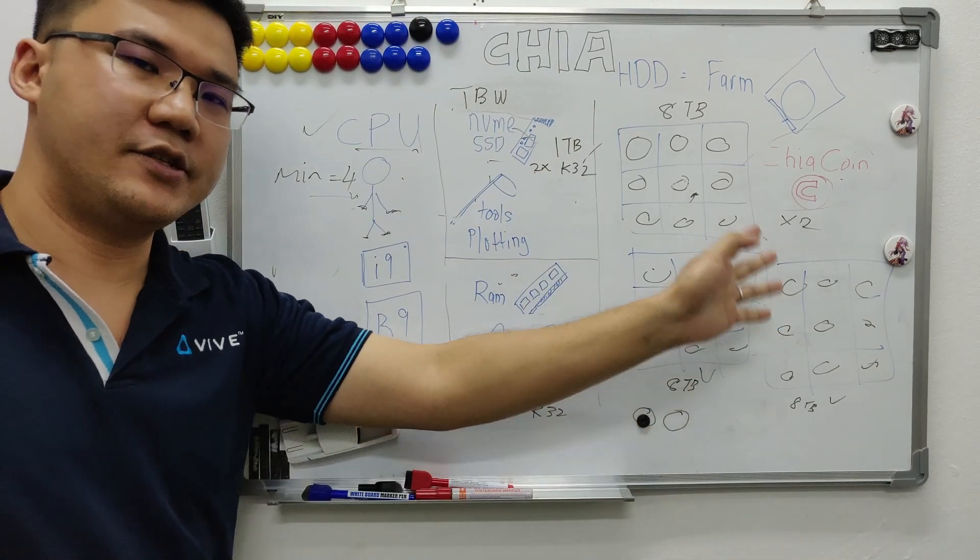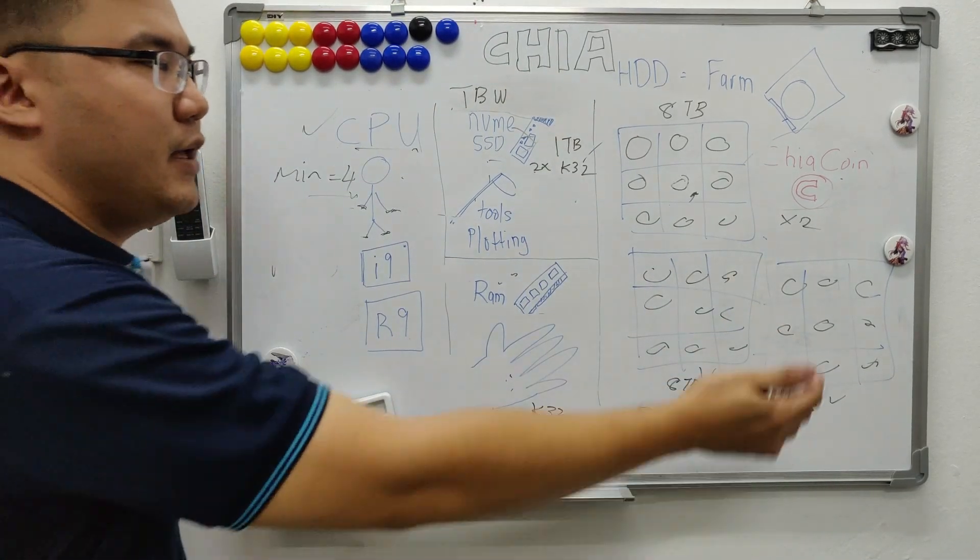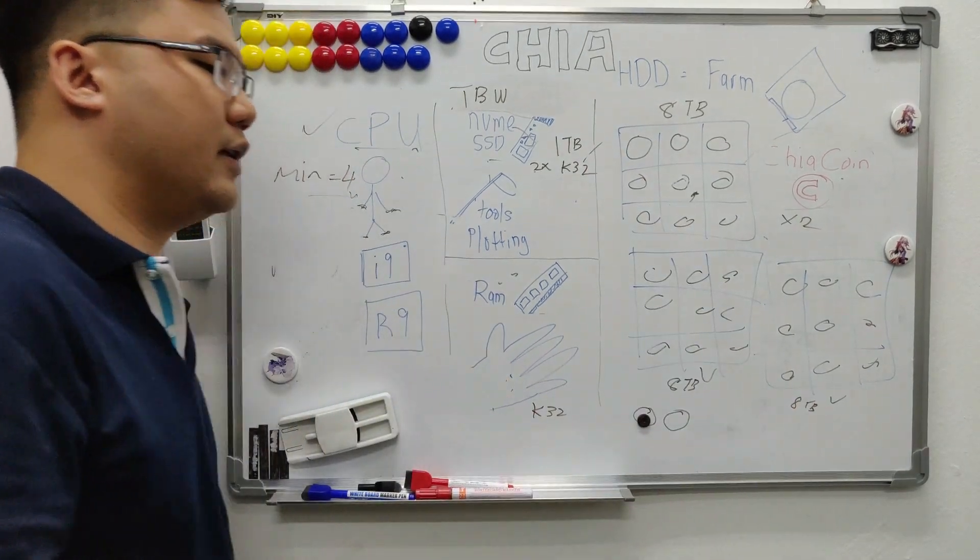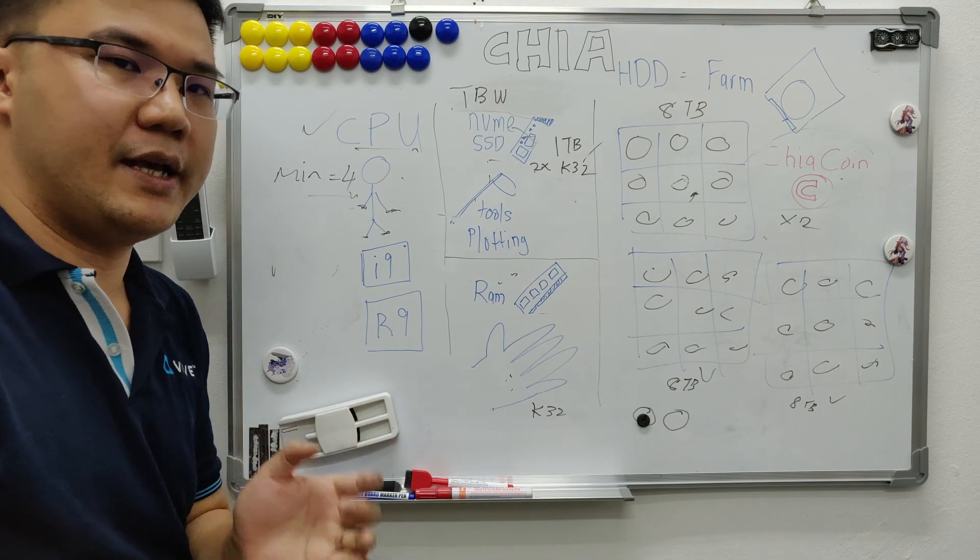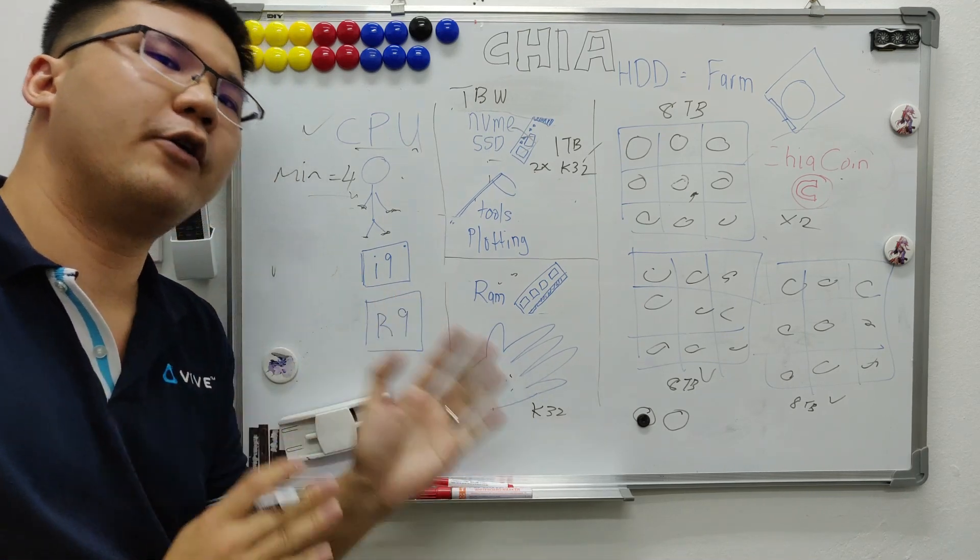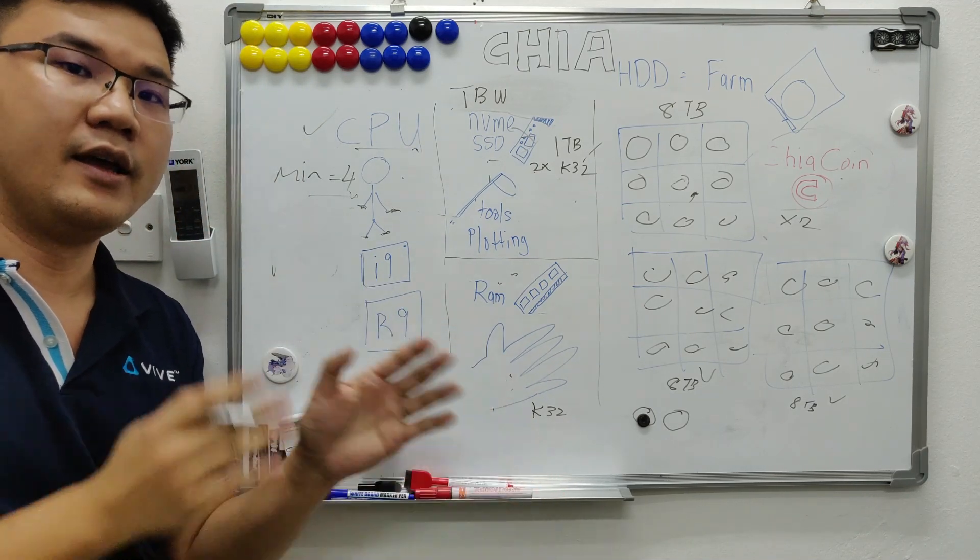Because this one is based on RNG, based on luck. Doesn't mean the more land you have, the easier. It does get easier to get. But it's still based on your luck. So there is no ROI that can be calculated right now.